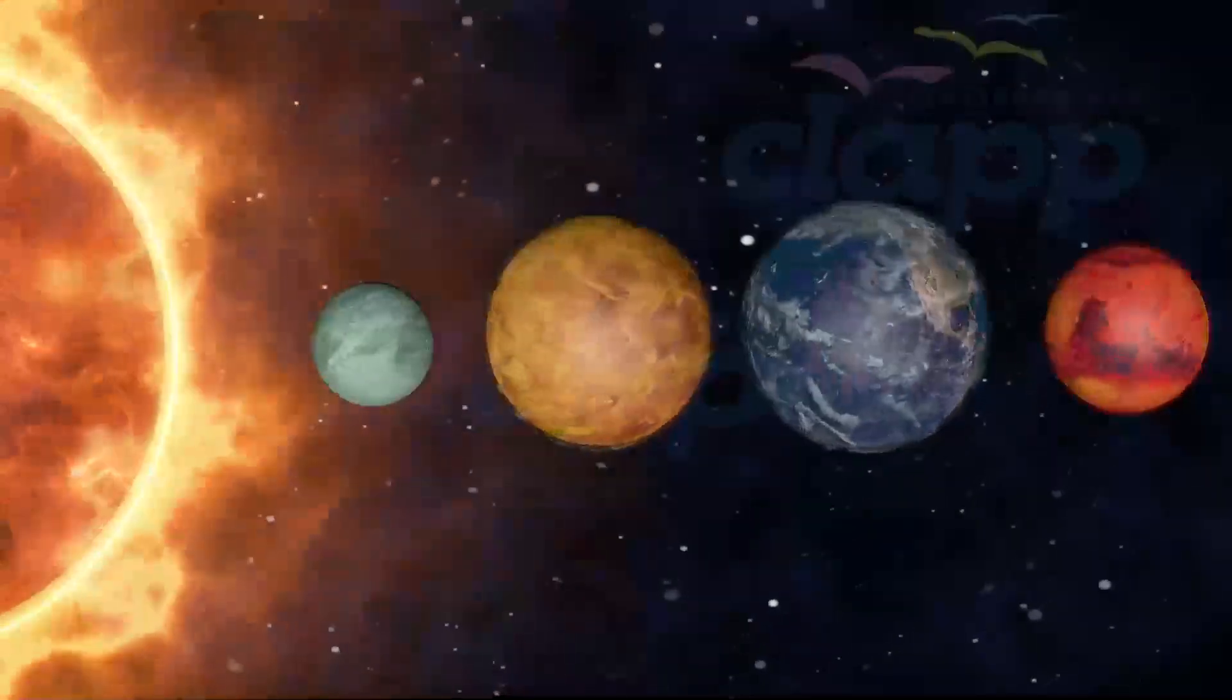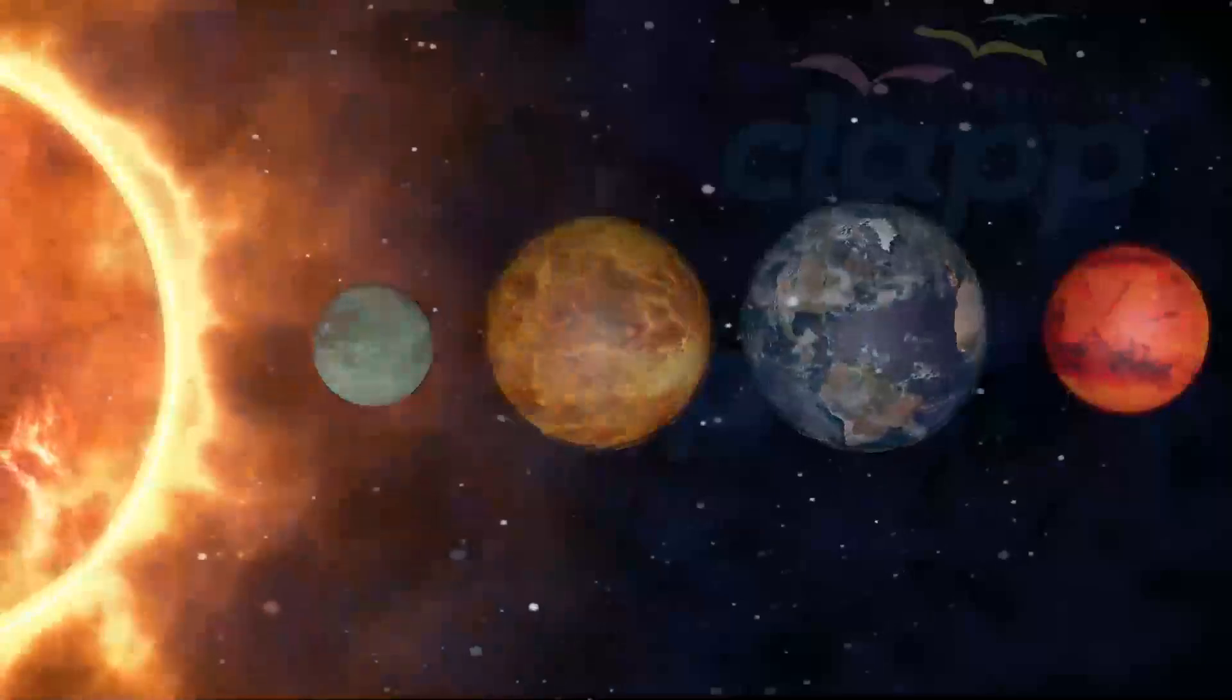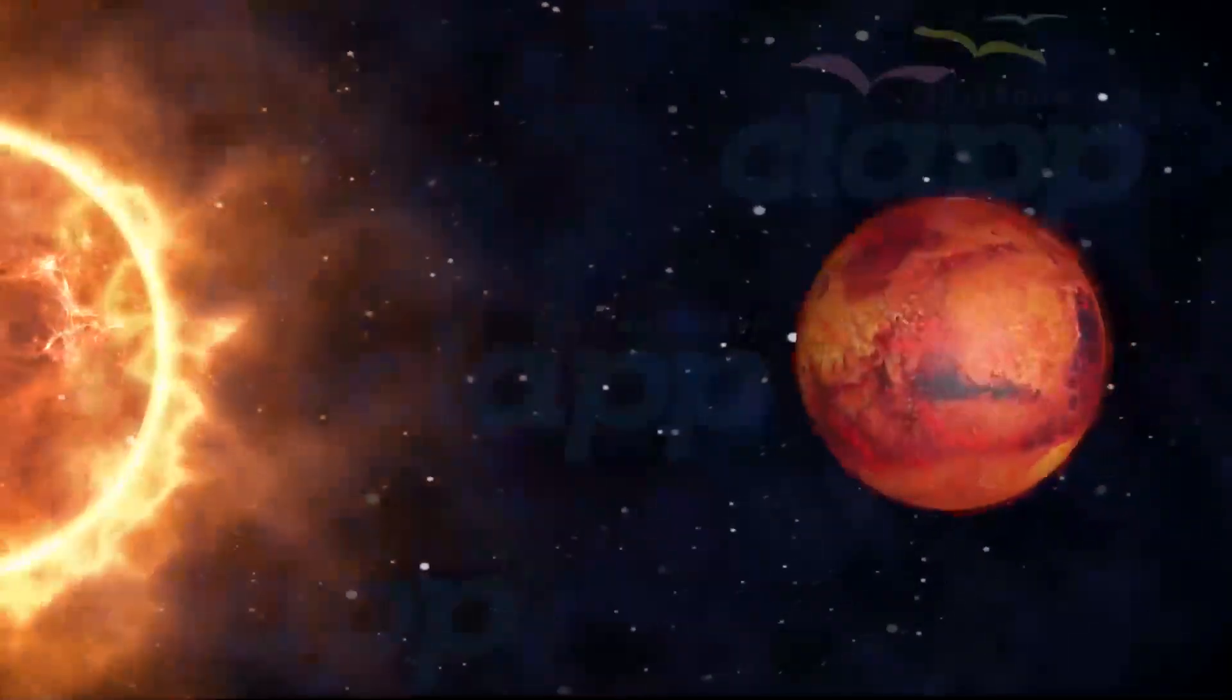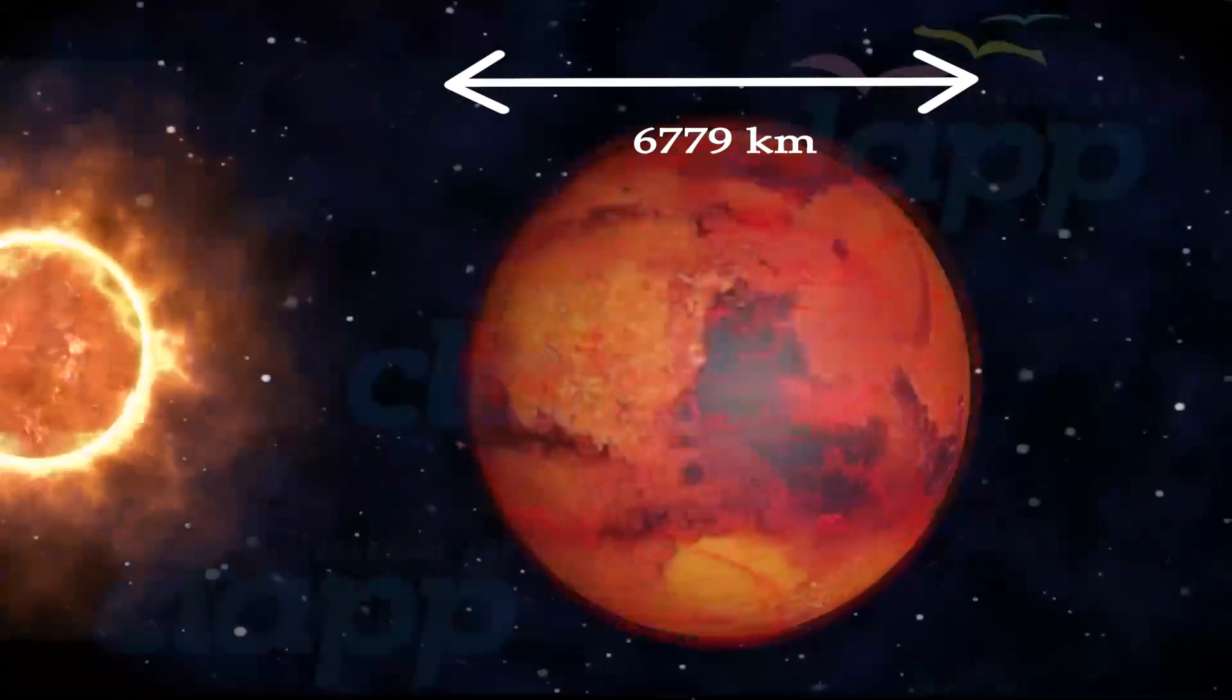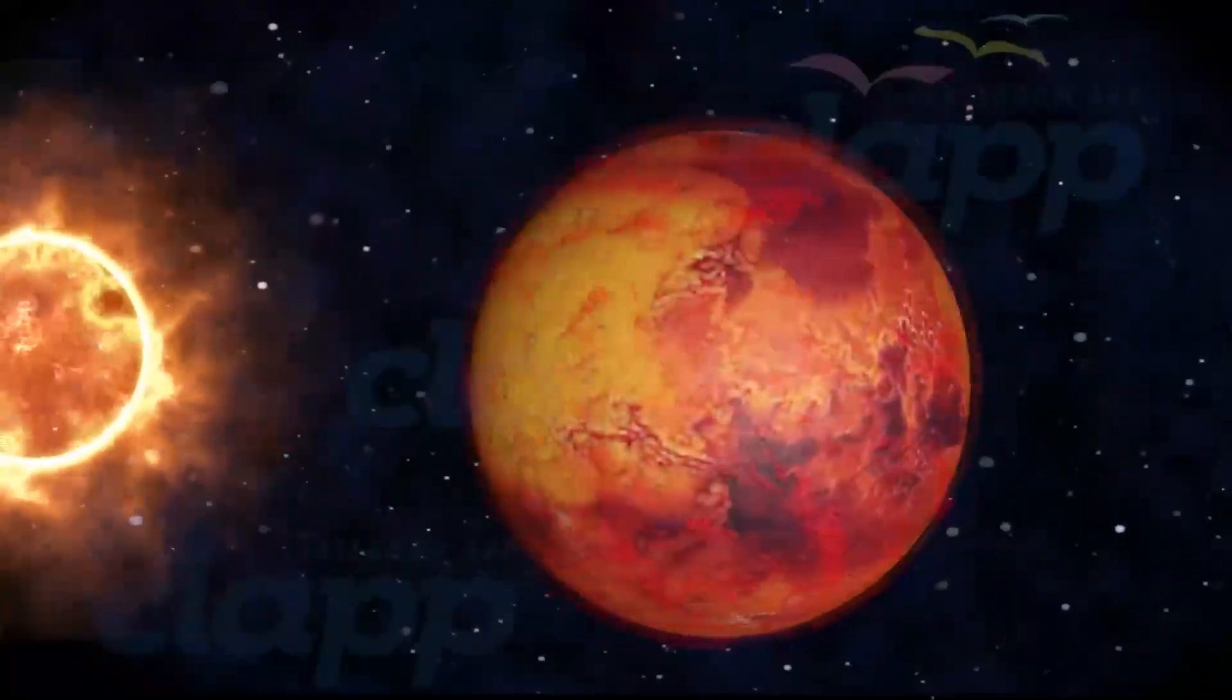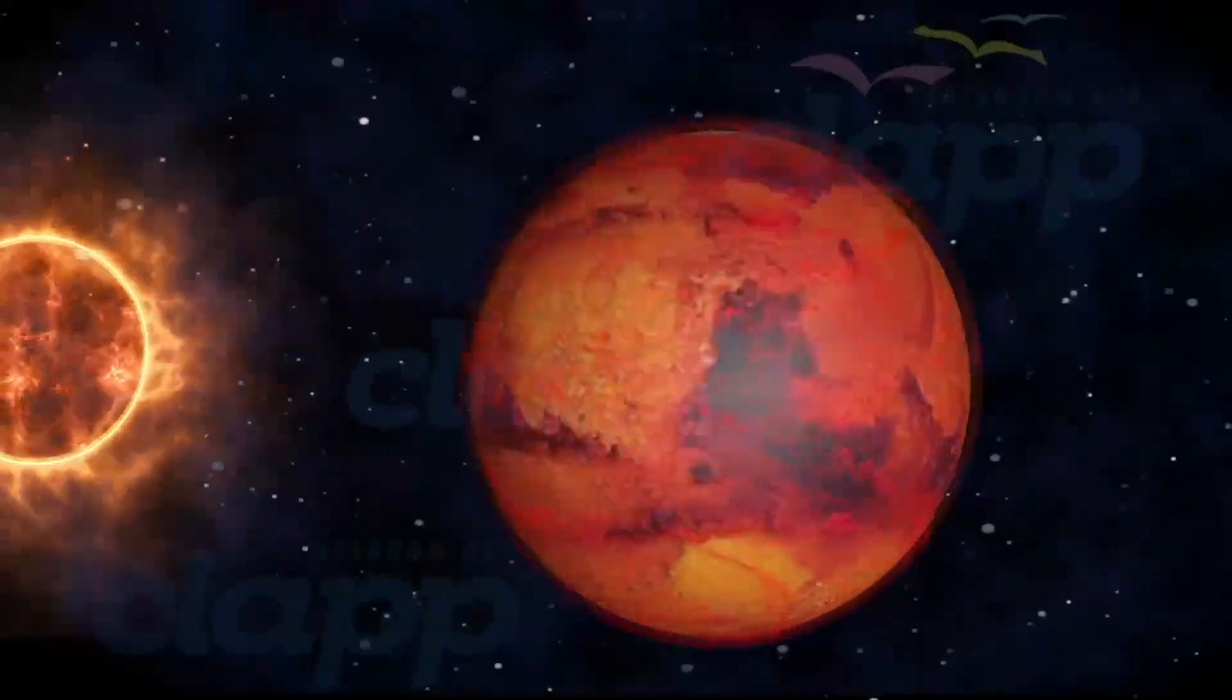Mars is a terrestrial planet with a thin atmosphere. The diameter of Mars is 6,779 kilometers. Mars takes 24 days to complete a rotation about its own axis.